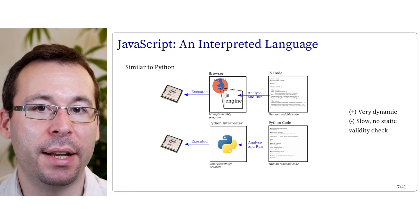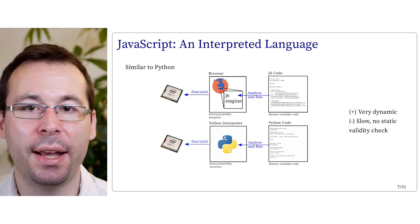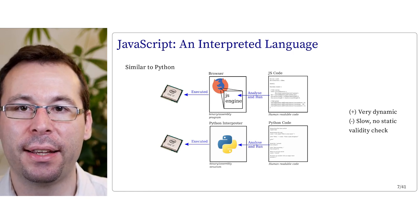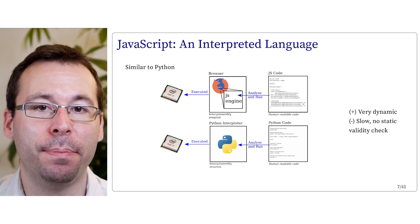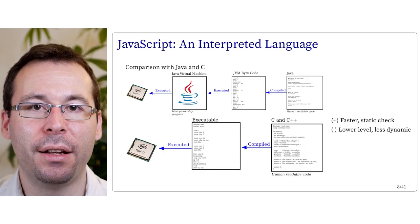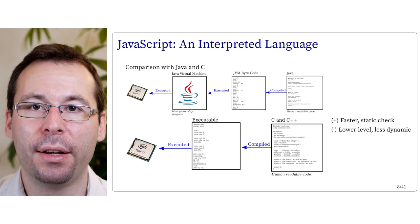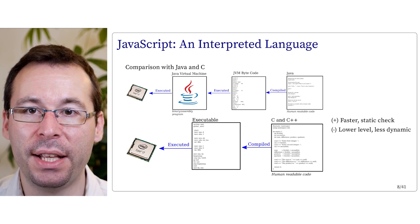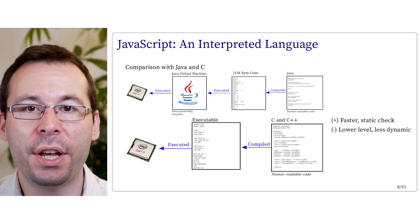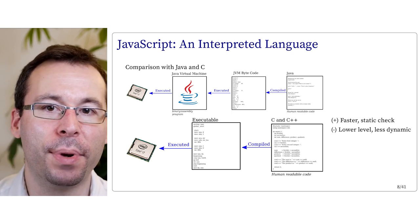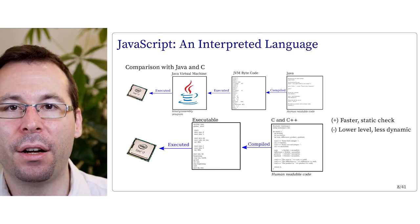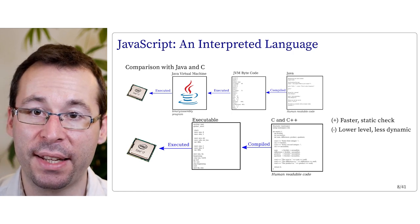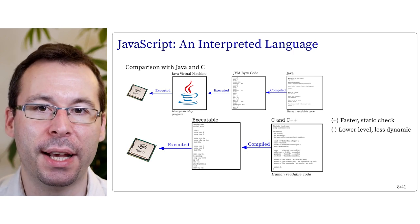Generally, interpreted languages can be very dynamic in the sense that the size and type of variables can be easily adjusted during execution. But these languages are also slower and don't have static validity checks — a step where the code is analyzed to detect type mismatches before execution. On the other hand, languages like Java and C are compiled languages. Compiling means the code is converted into assembly instructions — very basic unit instructions — that can be directly executed by your processor. Compiled languages are usually faster, provide static analysis during compilation, but are often lower level and less dynamic.